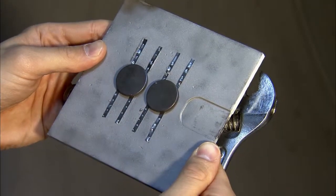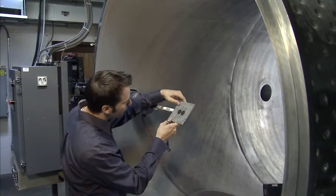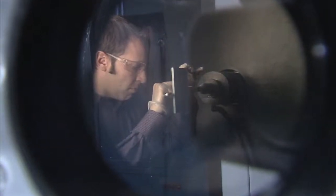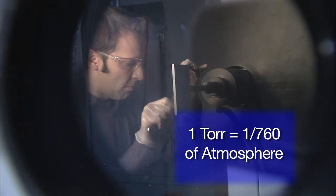During our run process, our samples are mounted to a metallic plate, which is then loaded on our sample mounting arm. The chamber is closed, and the entire system is evacuated to a pressure of 1 torr, which is 1/760th of atmosphere.